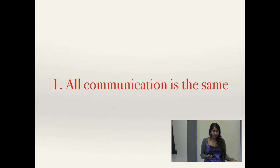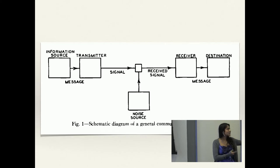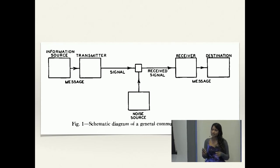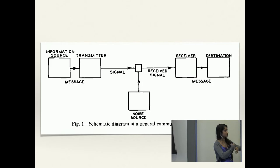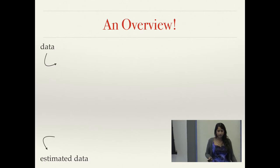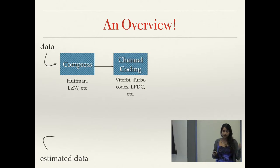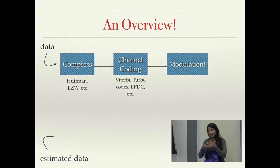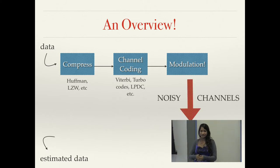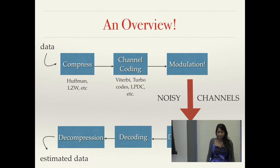Shannon put forth a diagram you'll see pretty much verbatim in any description of communication systems today. It decomposed a system into component parts: an information source that produces a message, a transmitter that encodes it to go over a noisy channel, and all that runs back in reverse. Today: you get data in, compress the sequence of bits, turn those bits into symbols that add error correction and redundancy, then modulate that into an analog wave to run over a noisy channel that messes up your data, then do the entire process in reverse.